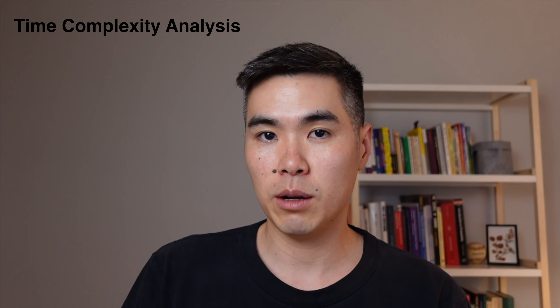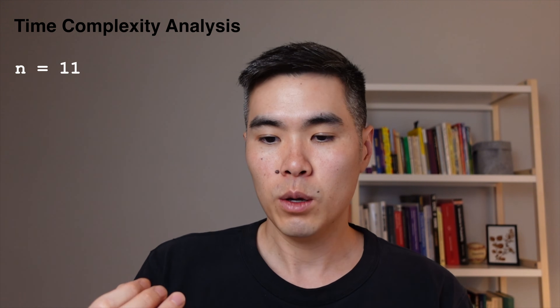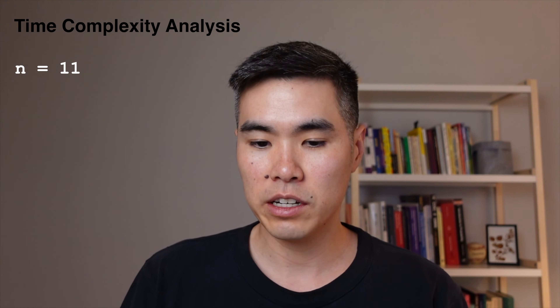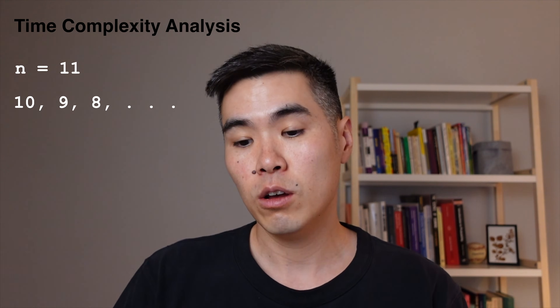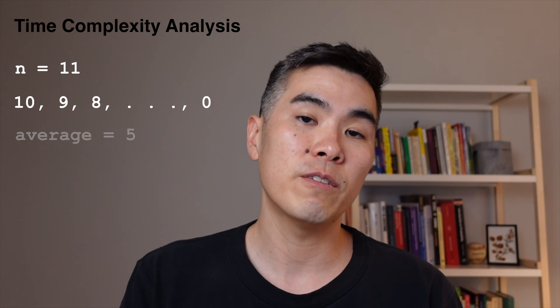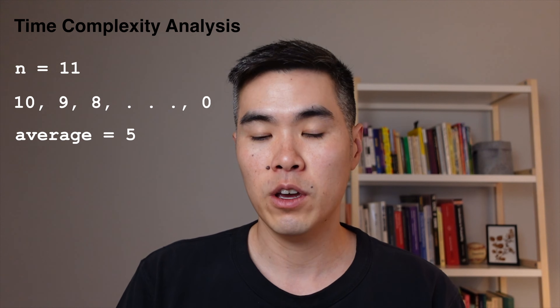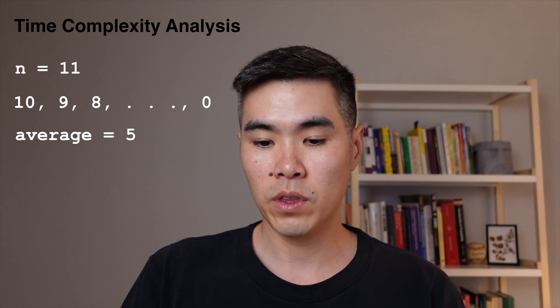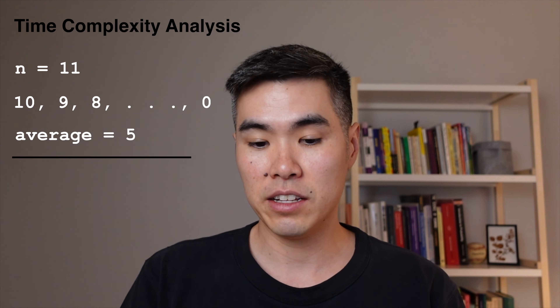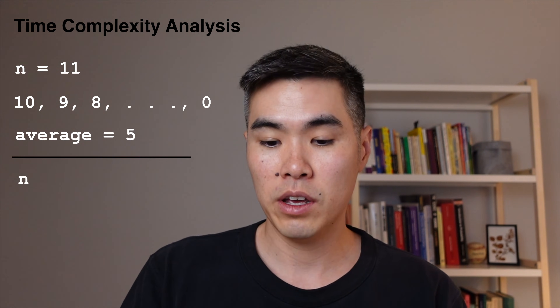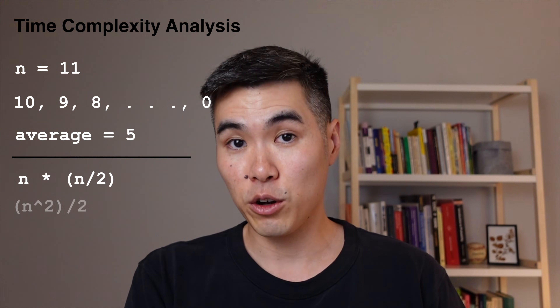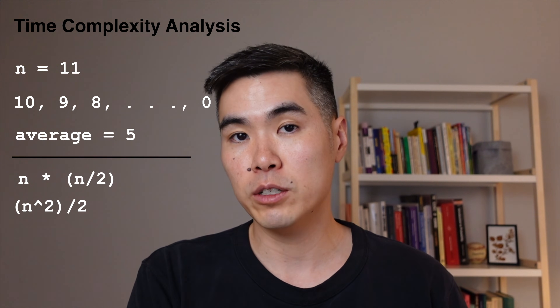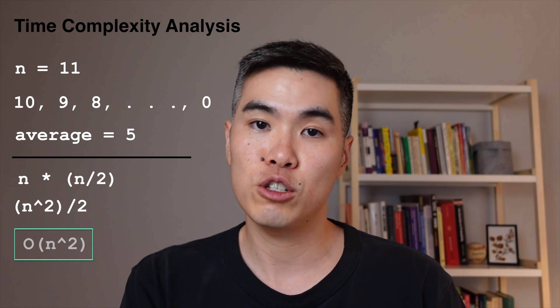If we consider a bigger example where n is 11, we can see this pattern more clearly. The inner loop runs 10 times, 9 times, 8 times, and so on, all the way down to 0. If we average all of these, we get 5, which is about n over 2. So the time complexity is n for the outer loop times an average of n over 2 for the inner loop, giving us n squared over 2, which simplifies in big O notation to O(n²).